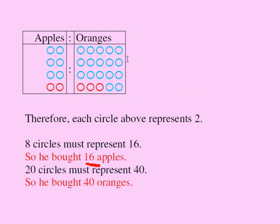How many oranges did he buy? Well, he bought 5 times 4, 20 circles representing oranges and each circle is worth two. So he must have purchased 40 oranges. That's our answer.